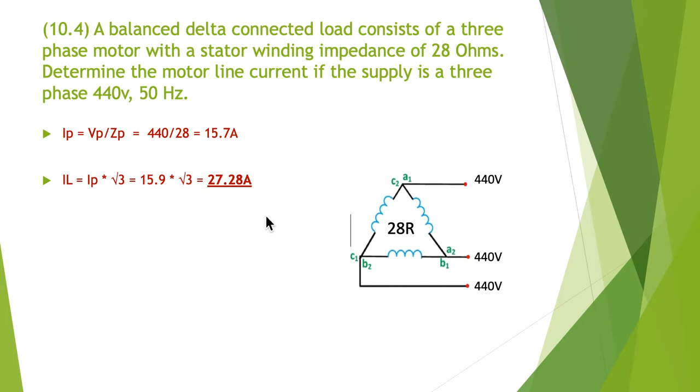So we needed to now know what the current was on the line. Again, just as a reminder, there's a root three relationship between the current in the phase and up here the current in the line. So here's I line. So in this particular case, we're going to have I line is equal to I phase multiplied by root three. And if we take our 15.9 and multiply by root three, we end up with 27.28. So 15.7 amps coming from our previous calculation. So our I line is 27.2 amps.